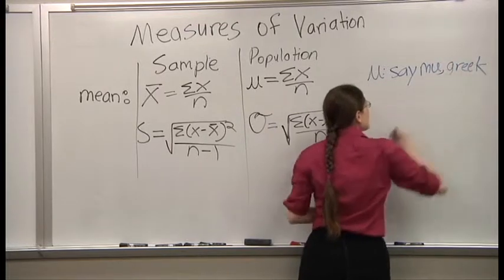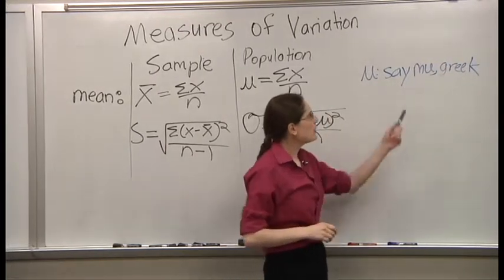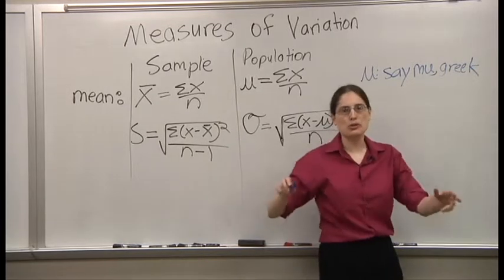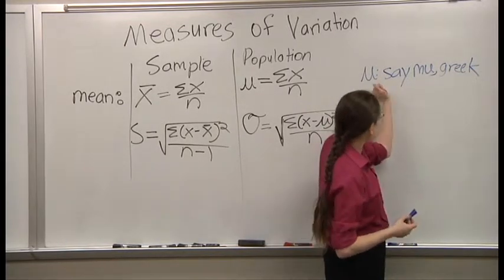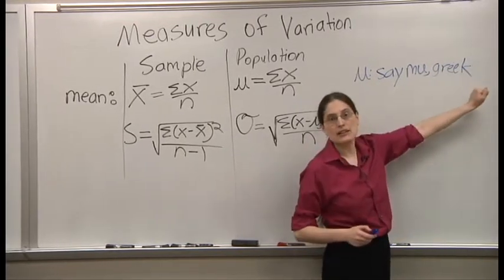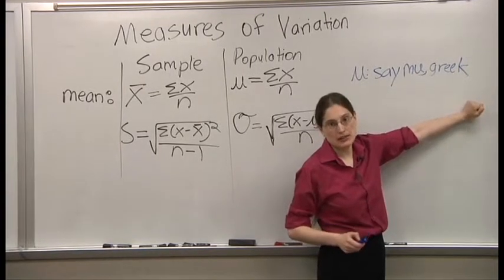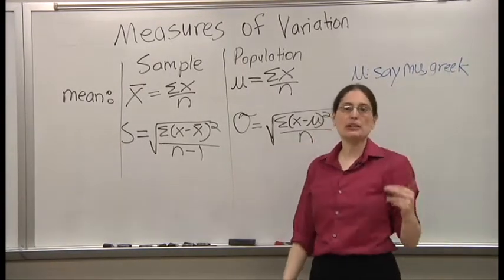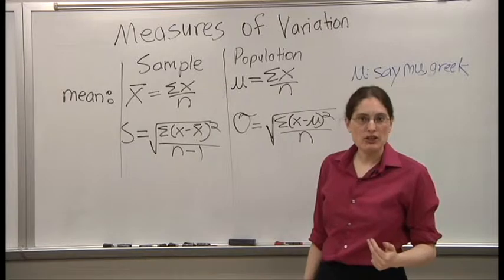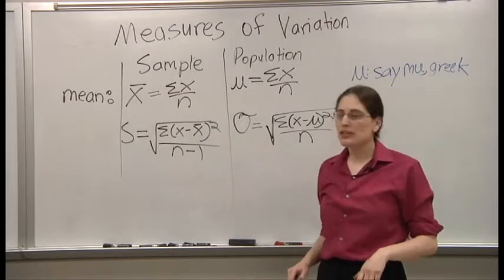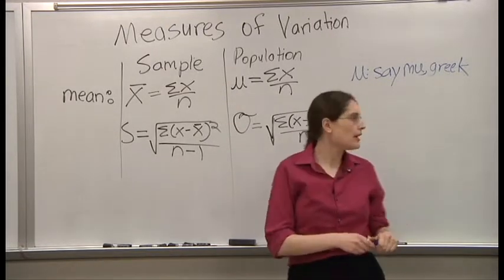Now, this is the Greek letter you say mu and it's wacky U and it's the population mean. We tend to use Greek letters for population values and regular letters for sample values.